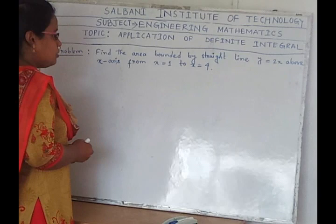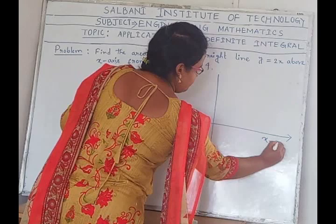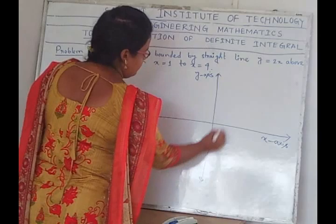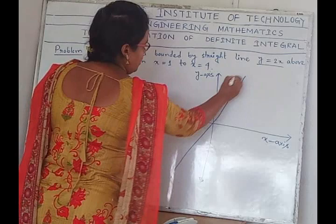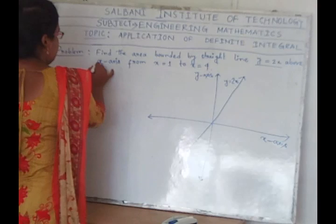To solve this problem, we first draw the diagram. We draw the x-axis and the y-axis. Then we draw the line y equals 2x. We take only the above part, not the below part.